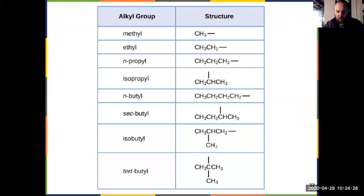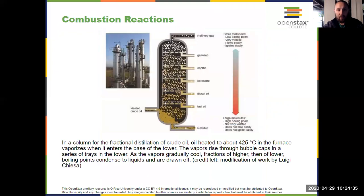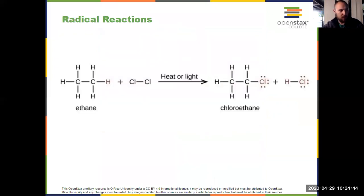Those are our basics of nomenclature. We'll talk about them more when we get to alkenes and alkynes, but let's talk about reactions next. How do alkanes react? Well, as mentioned in the first video, they can undergo combustion reactions, and we've discussed combustion previously. A combustion is a reaction with oxygen to produce CO2 and H2O.